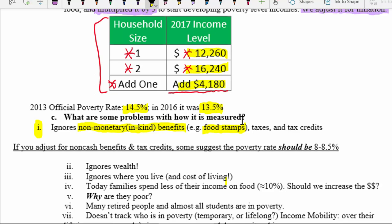A family might have income very close to the poverty threshold in cash, but extra benefits could technically bring them out of poverty — yet the way we measure it does not account for this. Also, the way we measure poverty ignores taxes and tax credits like the child tax credit, where even if you don't owe that amount in taxes you can get a refund. Similarly, the earned income tax credit adds to household income but isn't counted in these figures.